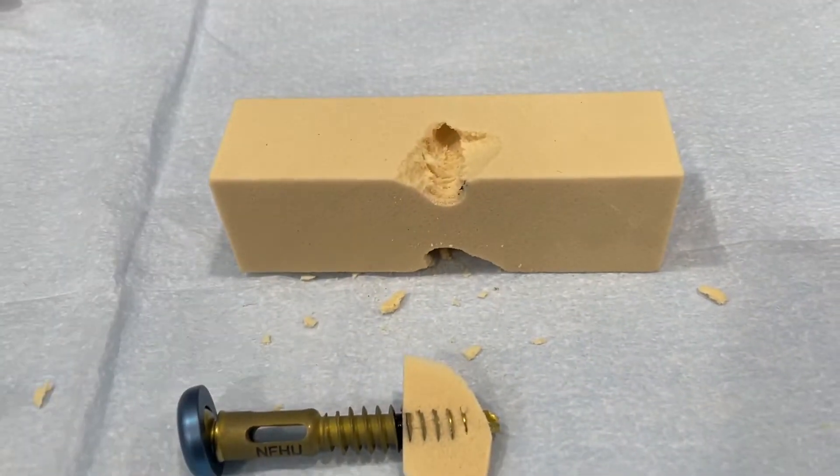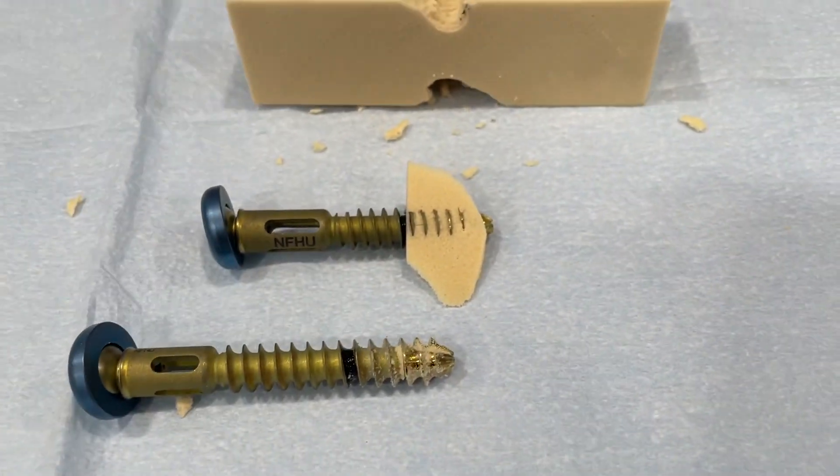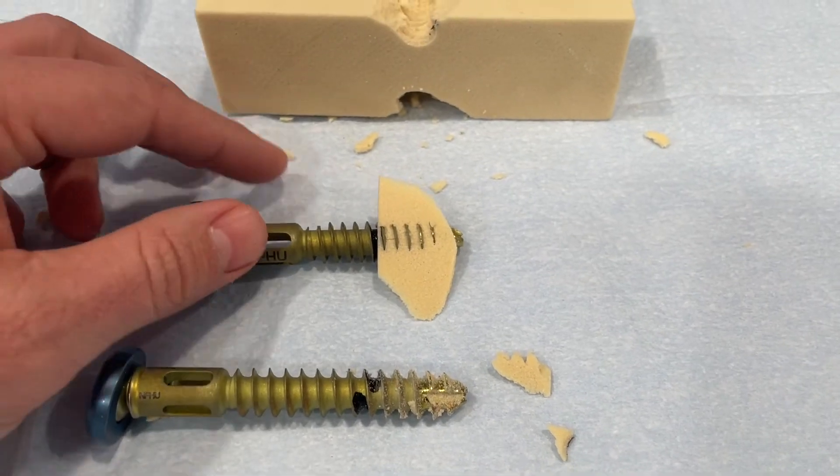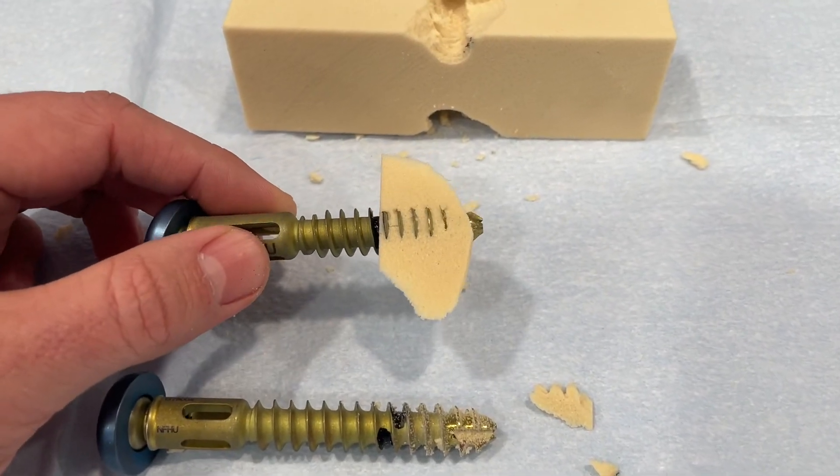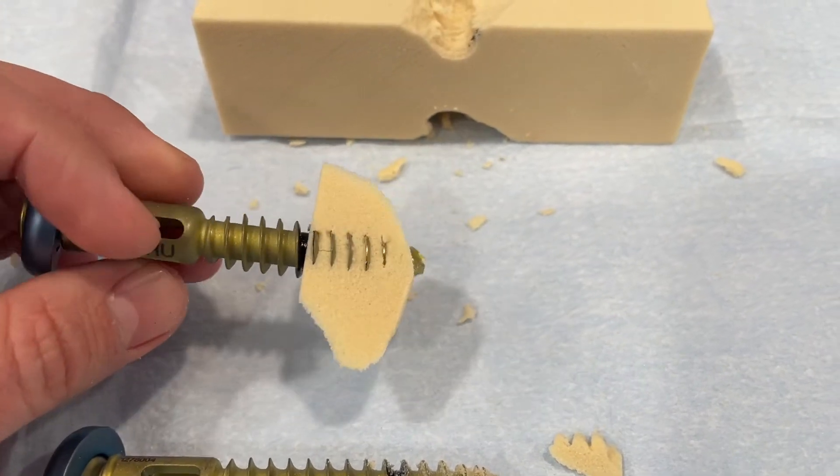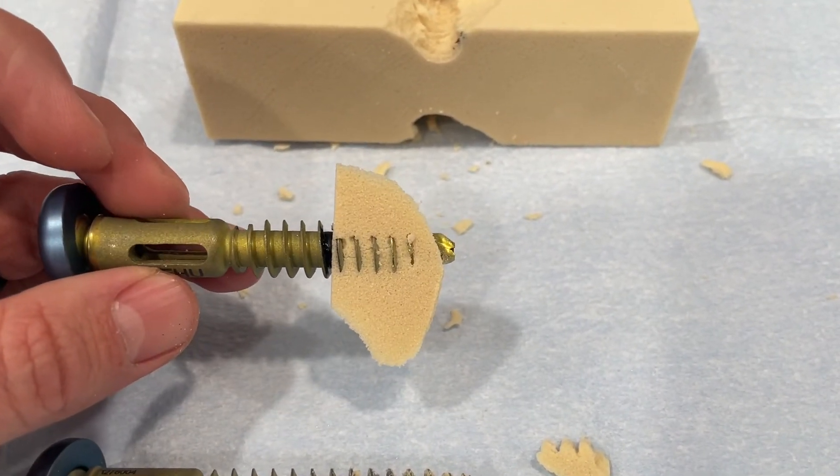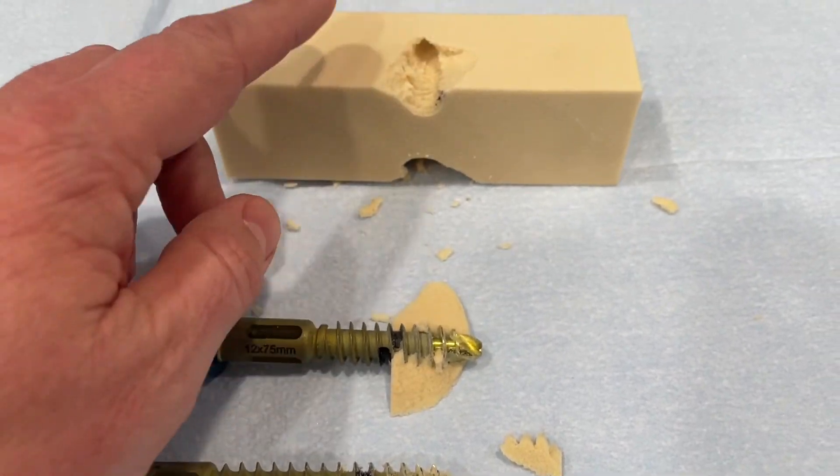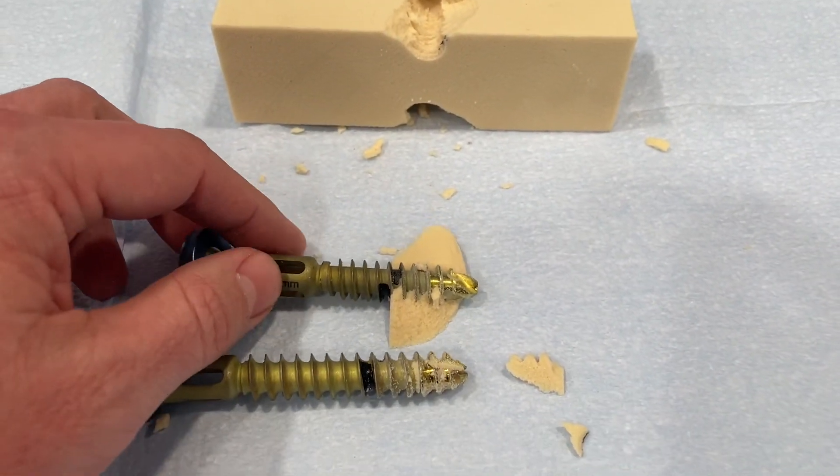Whereas before with a traditional style fastener, it pushed out and broke the bone out of the way, this one is mechanically integrated. That foam is still attached, holding on in that UniFi fastener. Pretty amazing to see the difference and noticeably more force to get it out of that block as well.